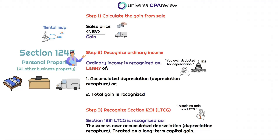This recapture will be done by recognizing ordinary income as the lesser of the accumulated depreciation or the gain recognized in step one. If accumulated depreciation is the lesser amount, that naturally means there is still some gain left over. So in step three, we recognize any remaining gain as our long-term capital gain. That's the good part for the taxpayer — what we calculated in step two is the bad part.